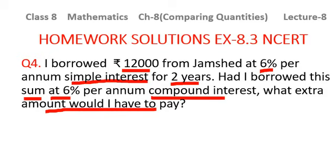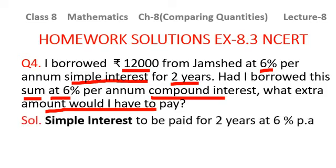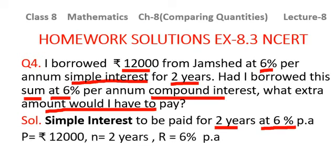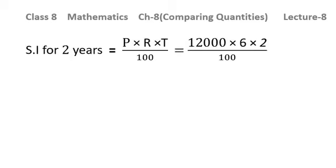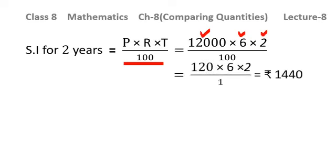Solution: For simple interest — P = ₹12,000, T = 2 years, R = 6% per annum. Using SI = P×R×T/100, we get SI = 12,000 × 6 × 2 / 100 = ₹1,440. For compound interest — using A = P(1 + R/100)^N: A = 12,000 × (106/100)² = 12,000 × 106/100 × 106/100 = ₹13,483.20. So CI = 13,483.20 − 12,000 = ₹1,483.20.